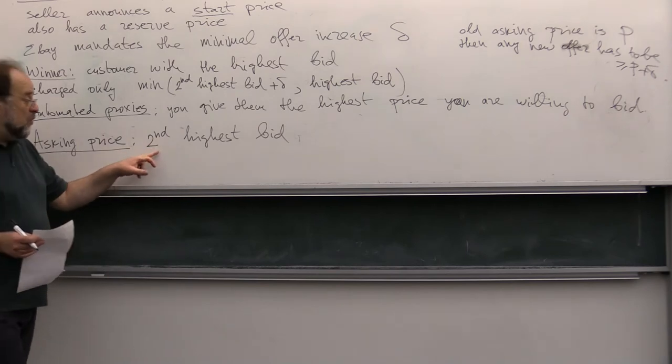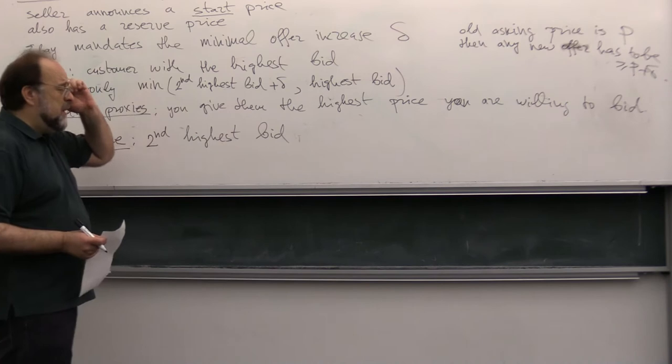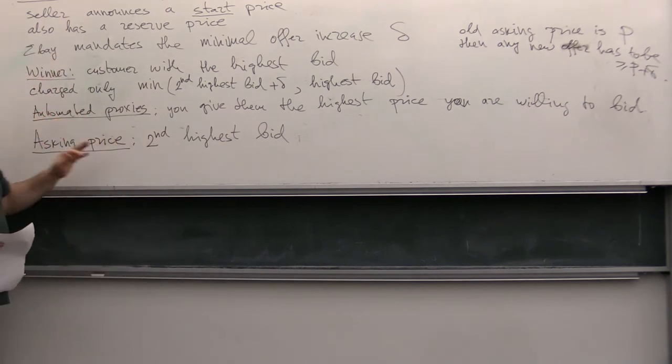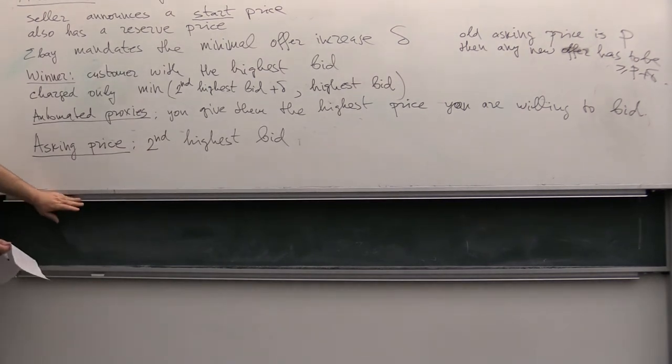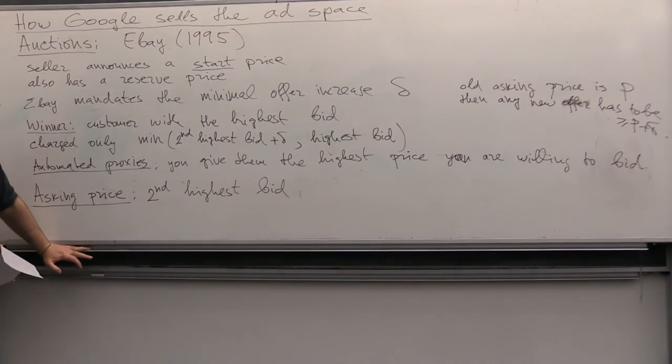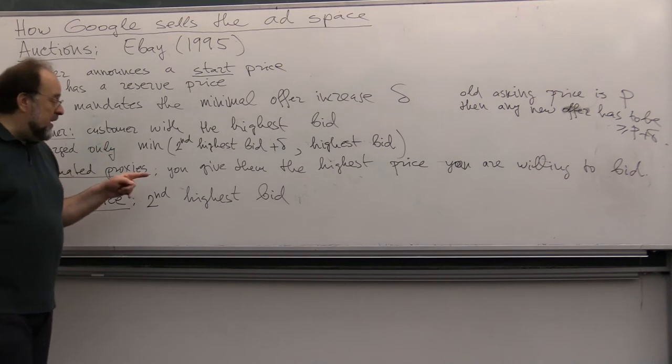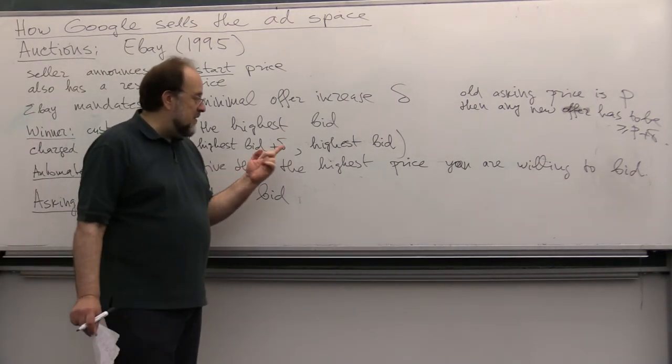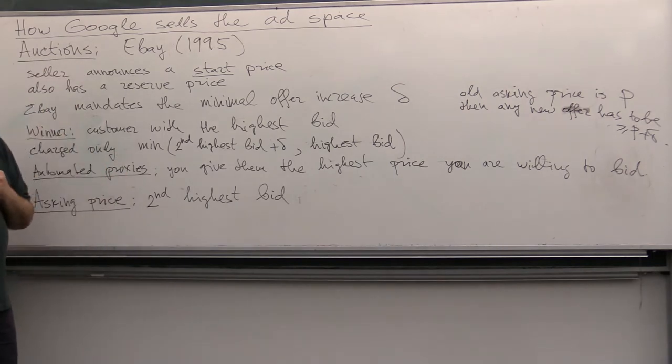So, what you see on eBay is not the highest bid. You cannot see the highest bid, but you see the second highest bid, right? Which is the amount, so this asking price plus delta will be what the winner, if he wins the auction, will have to pay. Okay, so this is what you see. Okay, so now, let's see why the auction functions in this way, why the winner is not charged his highest bid, but is actually charged the second highest bid.